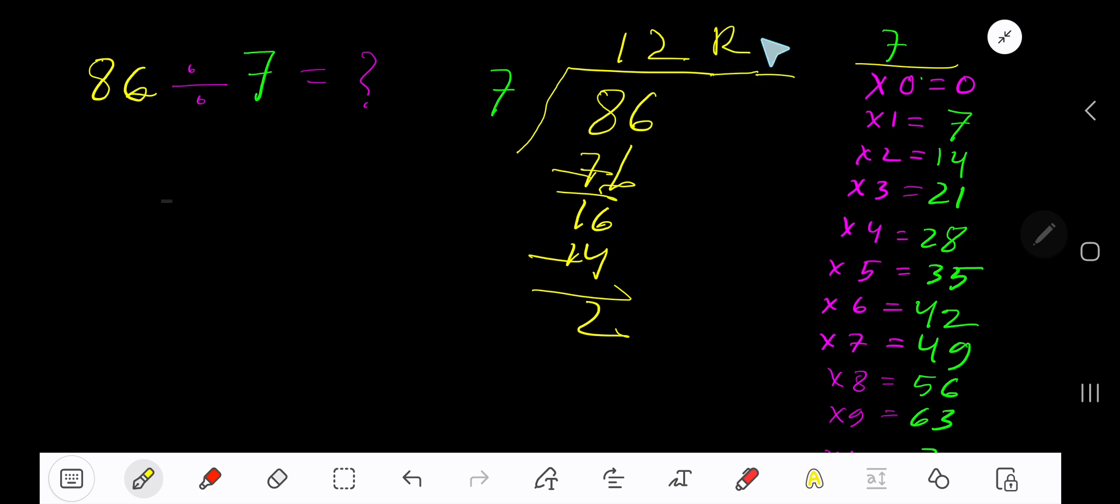So our answer is 12 remainder 2. If you want to write your answer in decimal form, then take your decimal and add number of zeros.